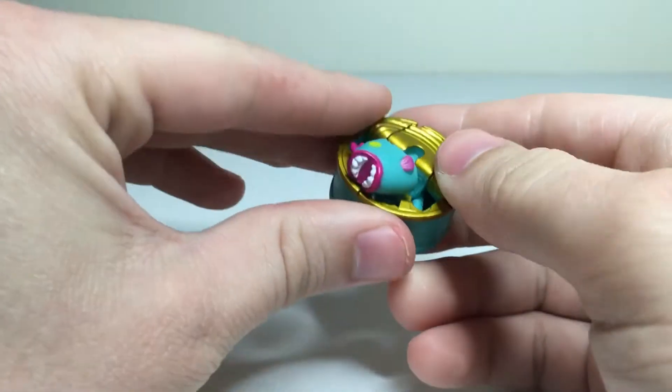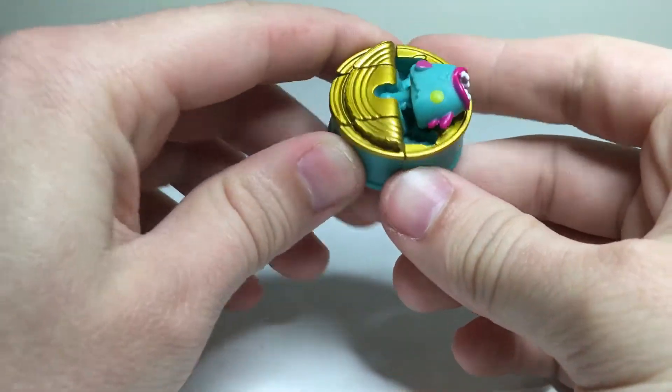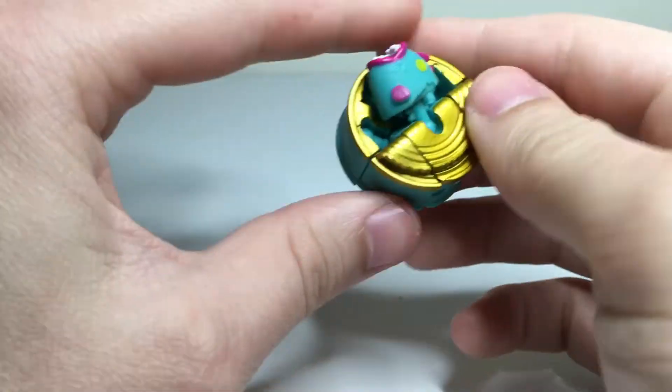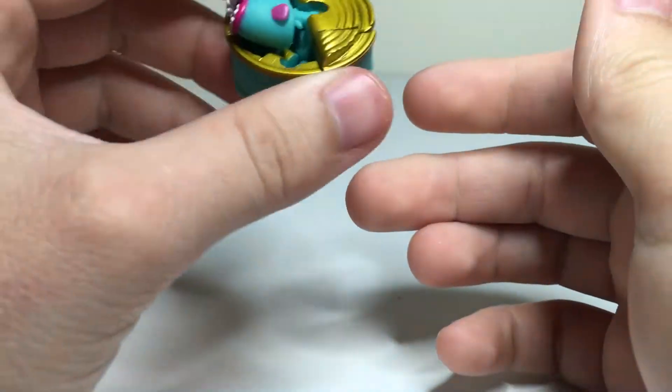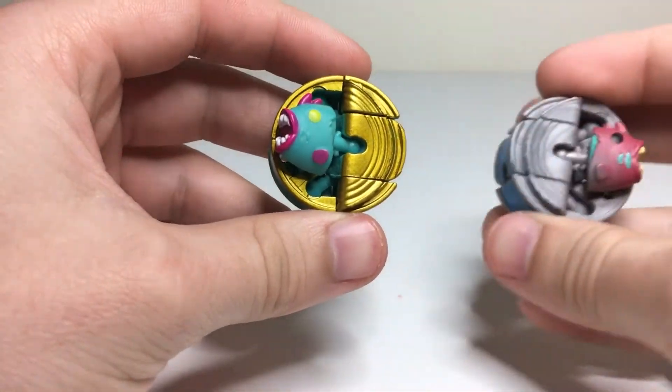Sardank is part of the Spoiled Rottens and turns into a little can of sardines here. This one is actually a repaint of the Series 2 Bot Bot, Big Can Tuna, which I have right here to compare.